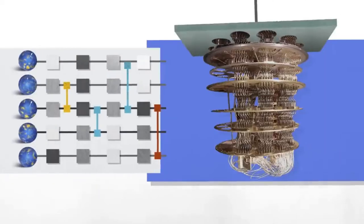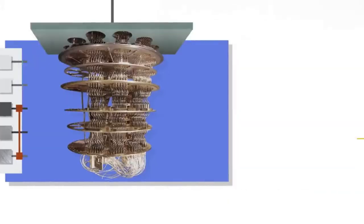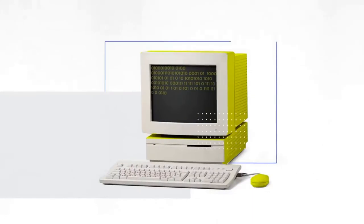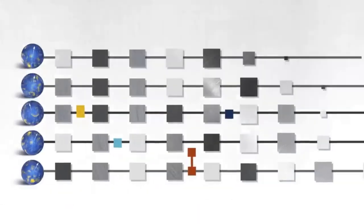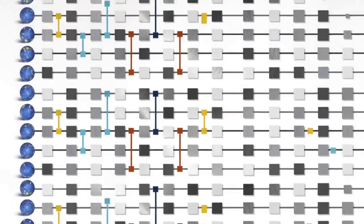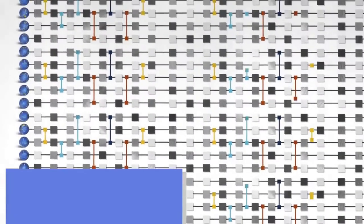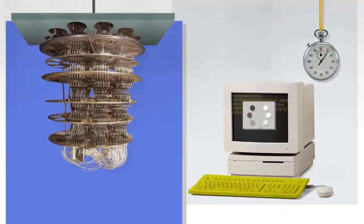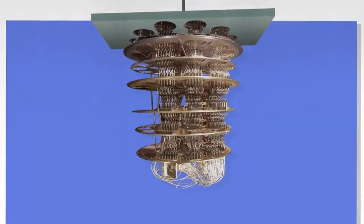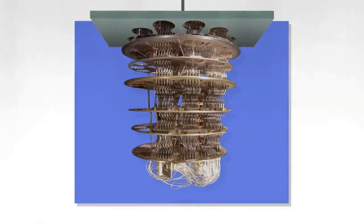To actually demonstrate quantum supremacy, we have these three steps. First, pick a circuit. Second, run it on the quantum computer. Third, simulate what the quantum computer is doing on a classical computer. We gradually increase the complexity of that circuit. At some point, it becomes completely impossible for the classical computer to keep up. Then we say we've achieved quantum supremacy.